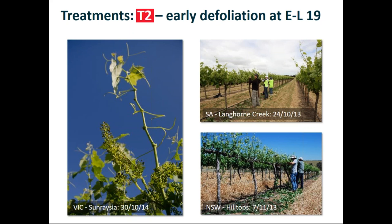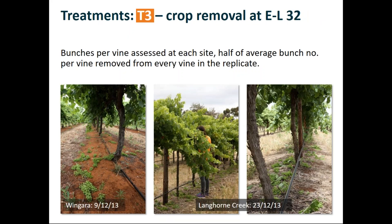The third treatment is the crop removal, which is fairly standard. We went out and assessed the numbers of bunches on vines across each of our field sites and then removed half of the average bunch number from every vine within our replicate. We would expect from that, because we'll get some compensation by the remaining fruit, that we would have quite a significant impact on yield but we wouldn't expect a half yield.